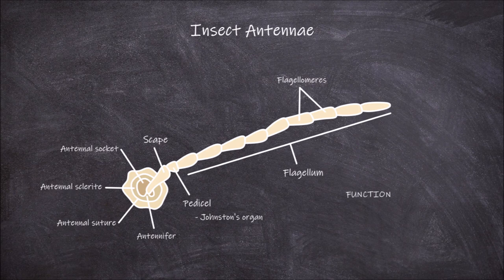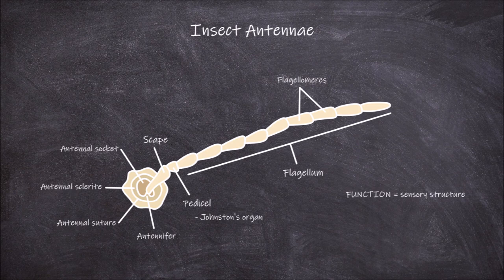The main function of the antennae in insects is as a sensory structure. They are primarily able to detect two types of sensors: tactile and chemical.